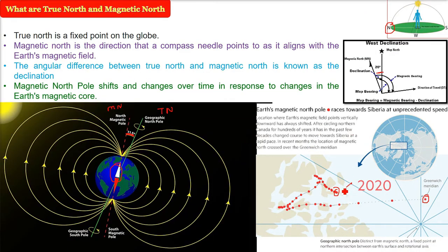Magnetic north pole shifts and changes over time in response to changes in the earth's magnetic core. As I suggested there is a magnetic core and the magnetic field is what you see in the picture and because of that the alignment is the actual alignment of the compass.